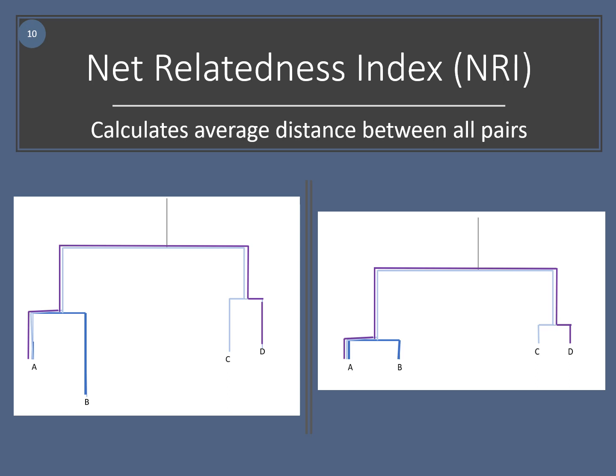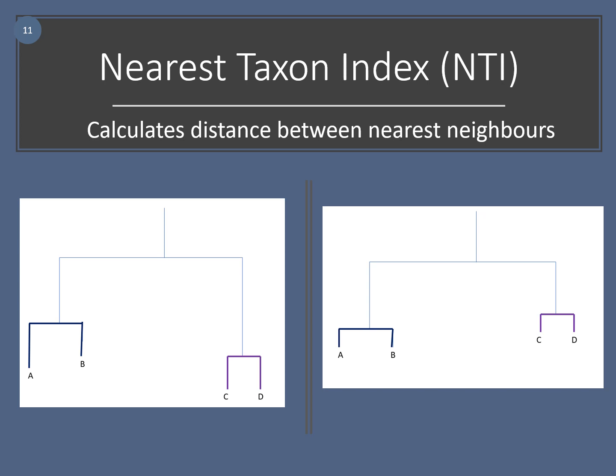Both NRI and NTI calculate phylogenetic community structure but in different ways. NRI calculates the average distance between all pairs, as shown by the colored lines on the trees pictured. High NRI values indicate closer relationships between species in a more clustered pattern. NTI calculates only the distance between nearest neighbors. Similarly, the higher the NTI, the closer the relationship between the species and the more clustered. NRI and NTI are able to detect patterns at different levels in the phylogeny, so it is beneficial to use both when investigating phylogenetic community structure.